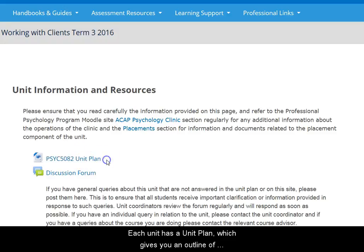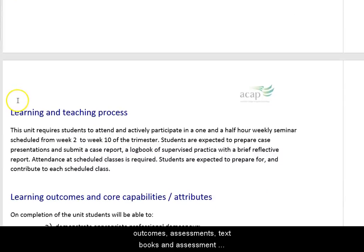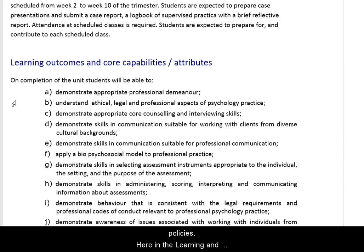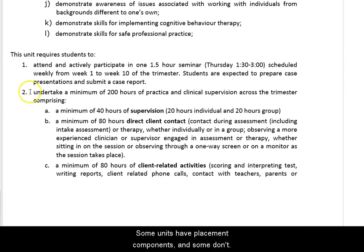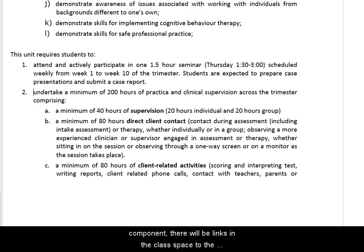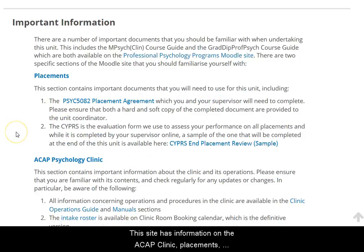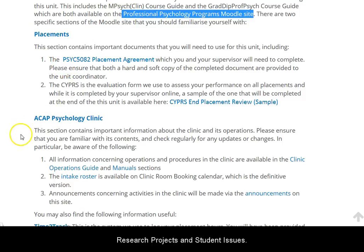Each unit has a unit plan, which gives you an outline of the content of the unit, including the learning outcomes, assessments, textbooks, and assessment policies. Here in the Learning and Teaching Process section, it explains how this unit includes placement work in the ACAP clinic. Some units have placement components and some don't. The unit plan is where you can find out if a particular unit has placement. When a unit has a placement component or a research component in the master's program, there'll be links in the class space to the Professional Psychology Program's Moodle site. This site has information on the ACAP clinic, placements, research projects, and student issues.